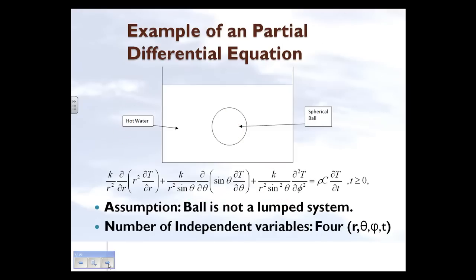Now we look at the same problem, but the only difference is that the ball is not a lumped system, which implies we cannot assume the ball has the same temperature throughout its body at a particular time. The distinction between a lumped and a non-lumped system is based on whether temperature stays the same throughout the body at a given time.